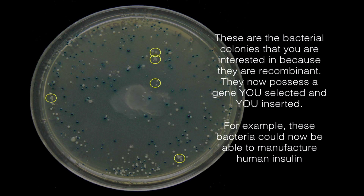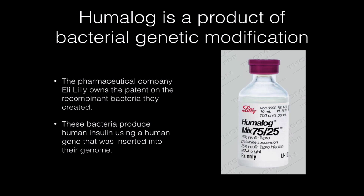For example, you could insert the gene for human insulin into the bacterium, and this has actually been done. A company called Eli Lilly has patented a recombinant bacterium that produces human insulin for diabetics and makes billions of dollars a year selling it. As the bacteria grow and reproduce they produce insulin, which can be refined and purified from the bacterial culture — and this is what most diabetics are using today. Thanks for listening.